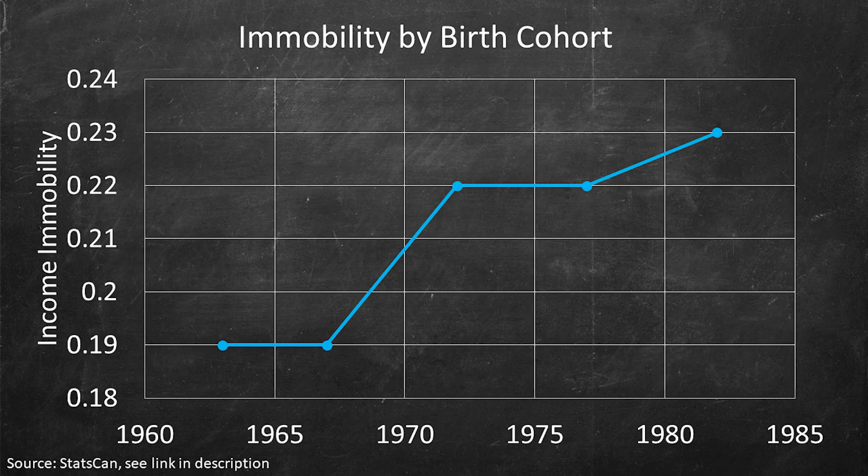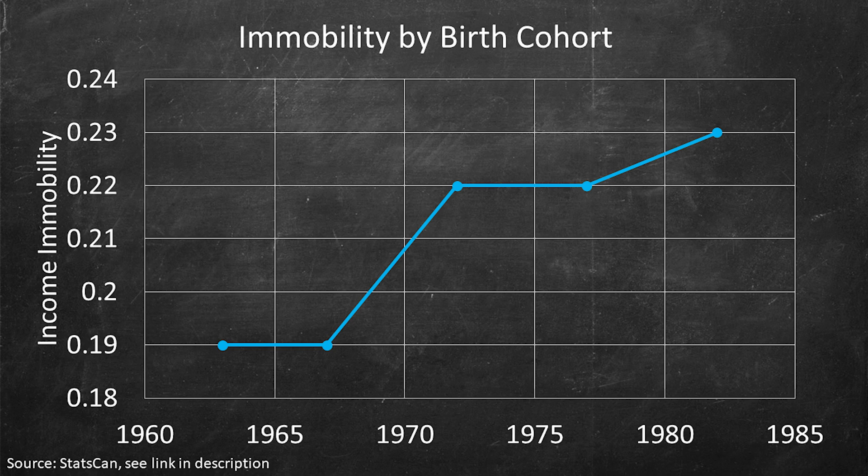And so what this chart is showing is that the intergenerational immobility, so bigger numbers mean that it's harder to rise out of, say, the bottom 20 percent, and that this measure has increased over the different cohorts. A perhaps easier way to interpret what this number is referring to, this intergenerational immobility, is to talk about probabilities. And we can do that with a so-called transition matrix.